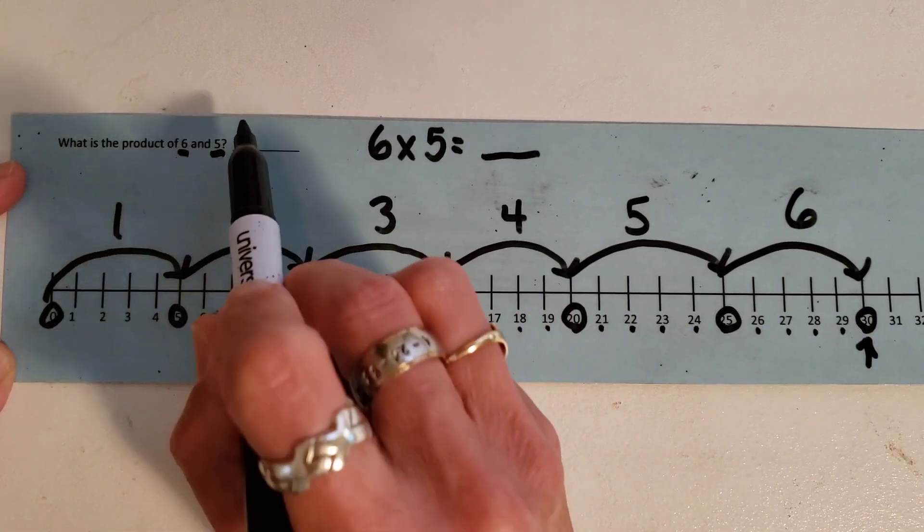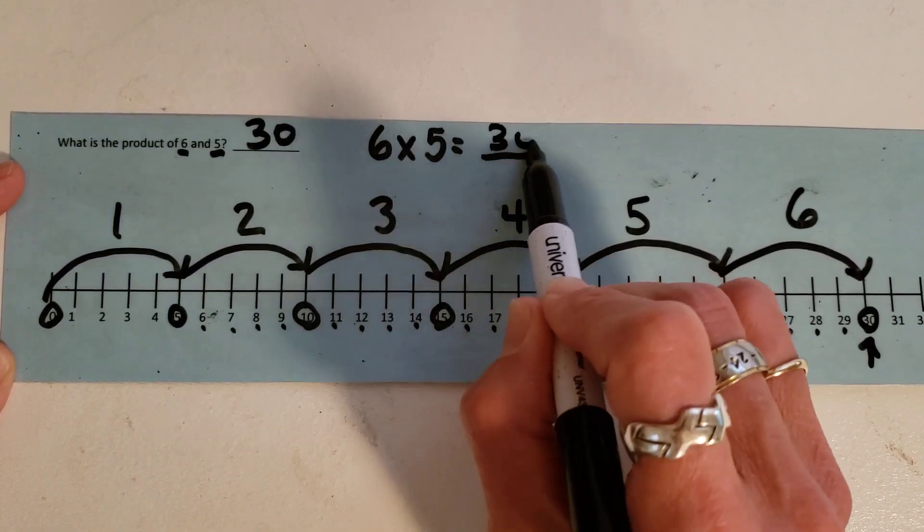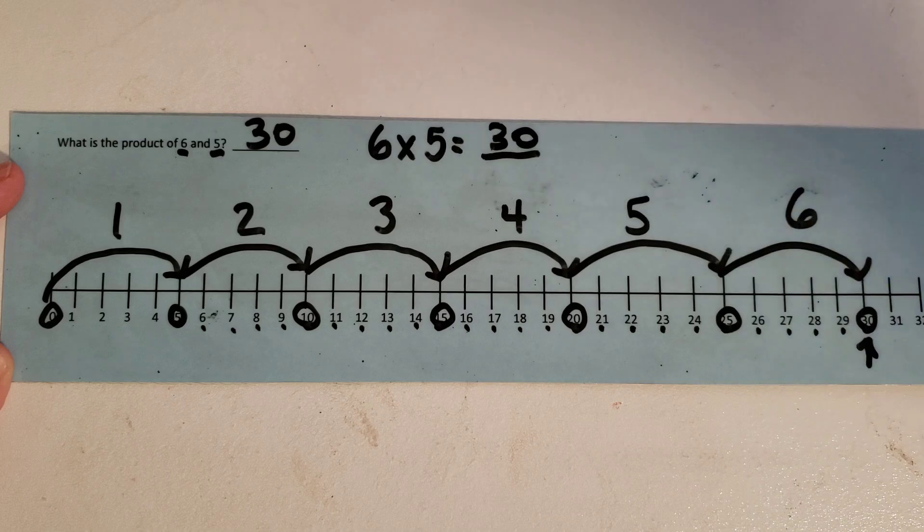That means that the product of six and five is going to be 30, which means six times five is going to be 30. I hope you got that.